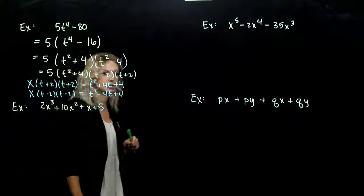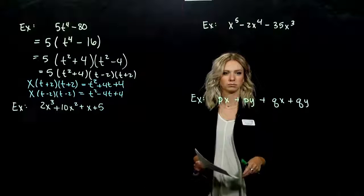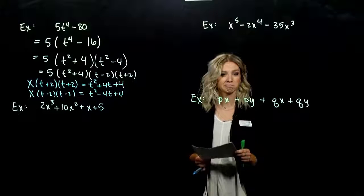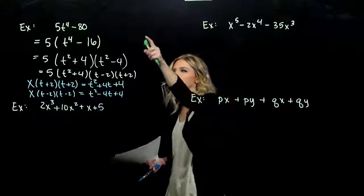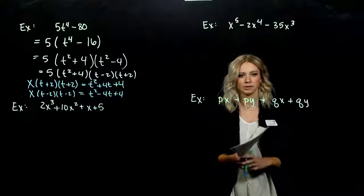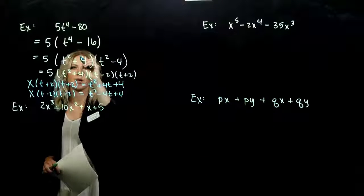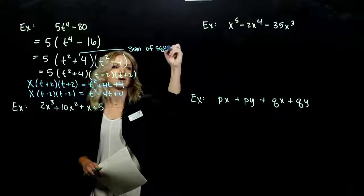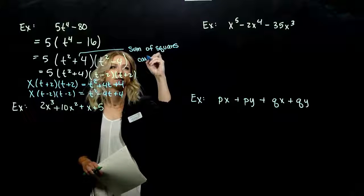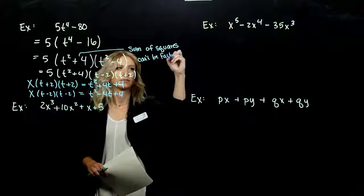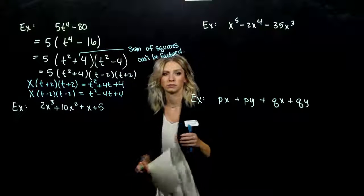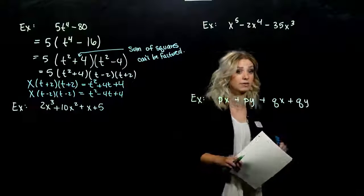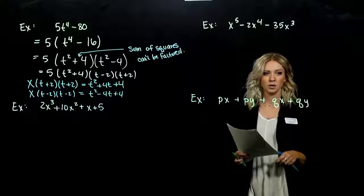We have our greatest common factor of 5 that we took out in the beginning. If you aren't confident this is the right answer, multiply it all out and make sure you get back to the original. An important note: when we have a sum of squares, it can't be factored — that will always be the case when we've got a perfect square plus a perfect square. A difference of squares we can handle, but a sum we cannot.